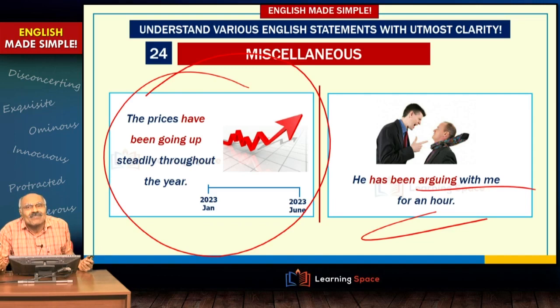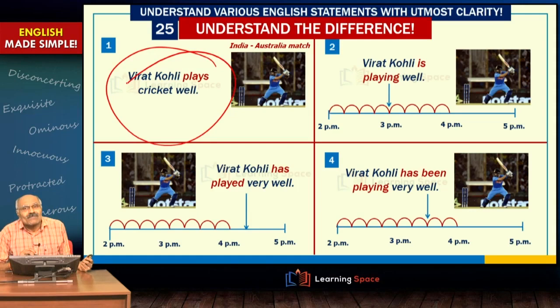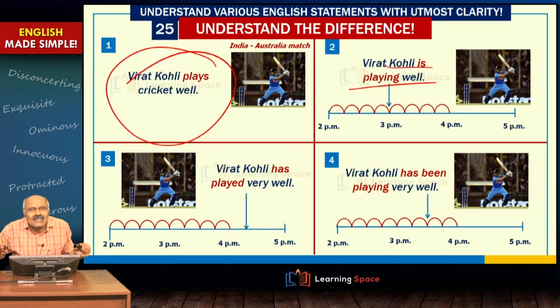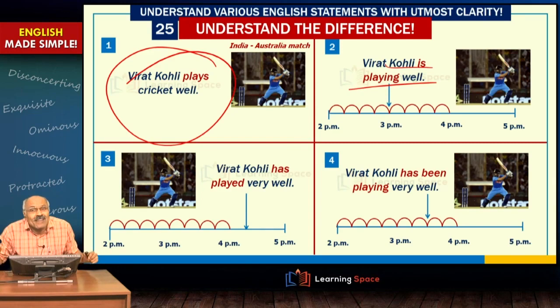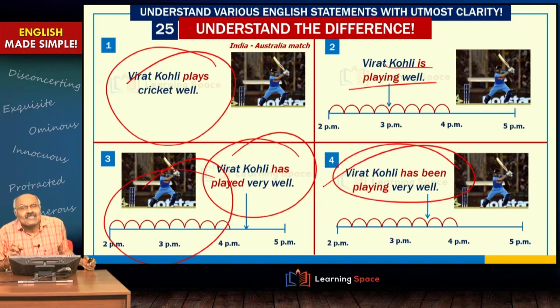To summarize the difference: 'Virat Kohli plays very well' is a general statement. 'Virat Kohli is playing well' is used when you are watching a match at that moment. 'Virat Kohli has played very well' is used when a match completed that morning and India won because of his batting. 'Virat Kohli has been playing very well since morning' indicates his continuous action — he is still playing.